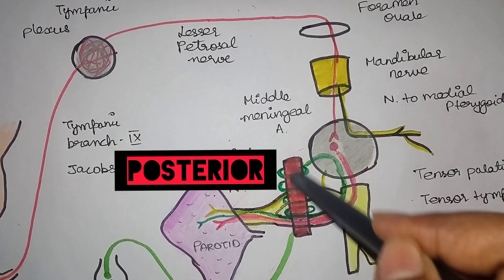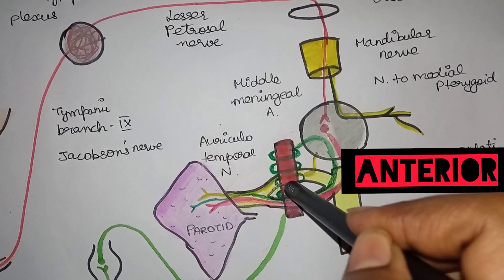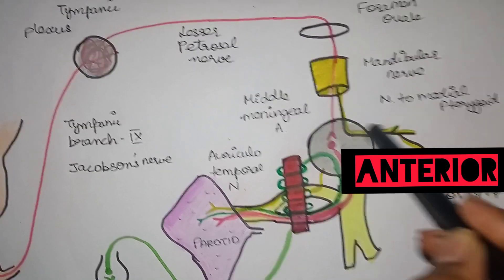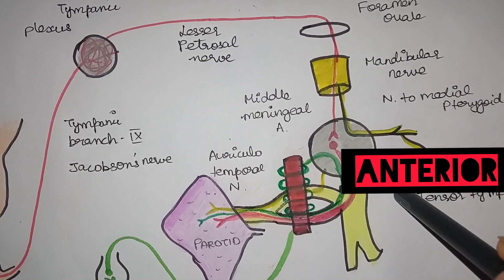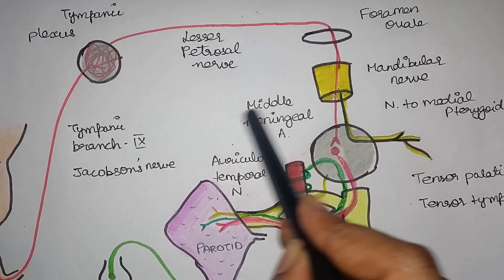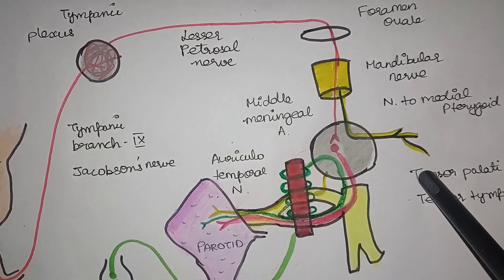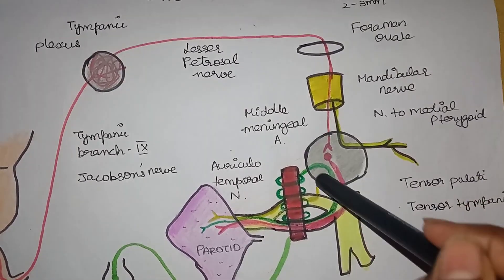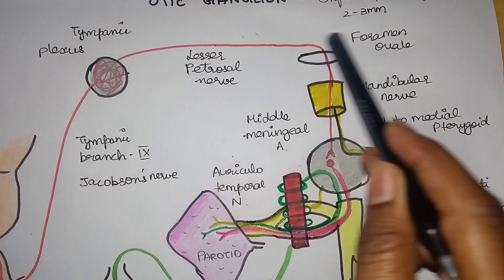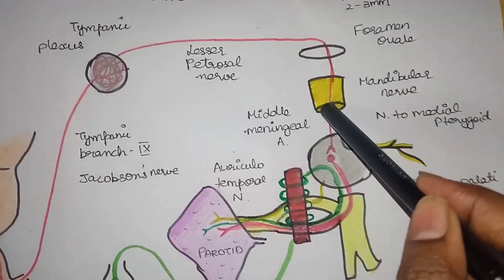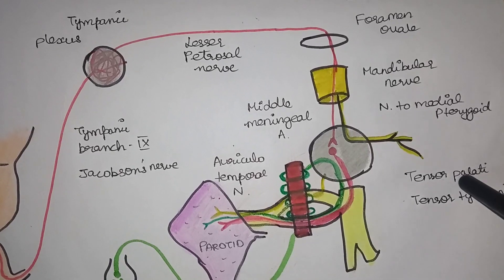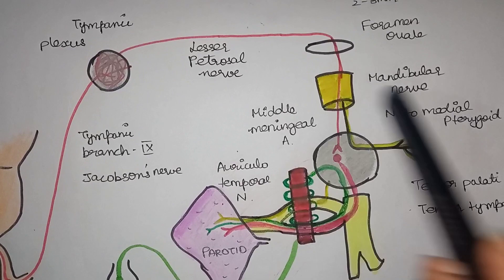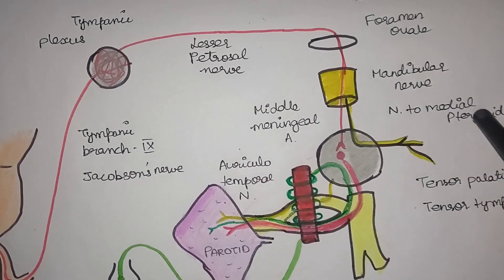Posteriorly, one of the relations is the middle meningeal artery. The medial relation is the nerve to medial pterygoid muscle. So the immediate relations are: below the foramen ovale, lateral is the mandibular nerve, medial is the tensor palati muscle, and posterior is the middle meningeal artery.